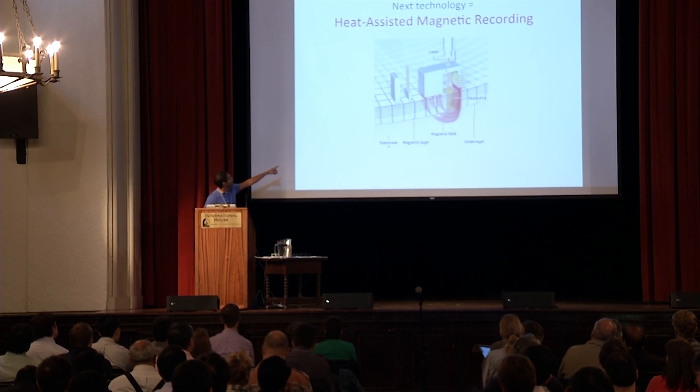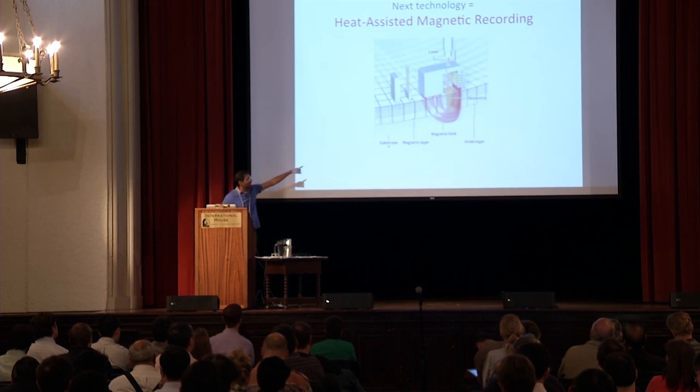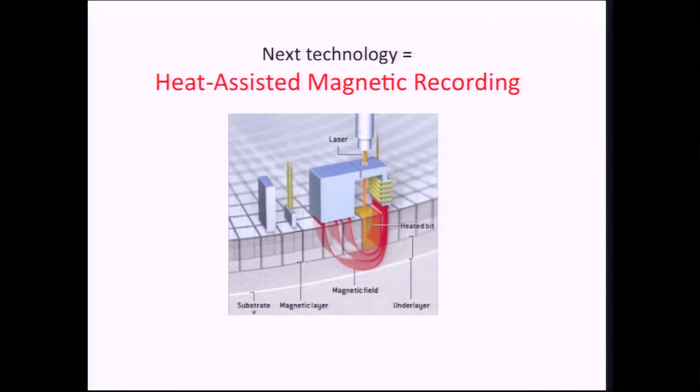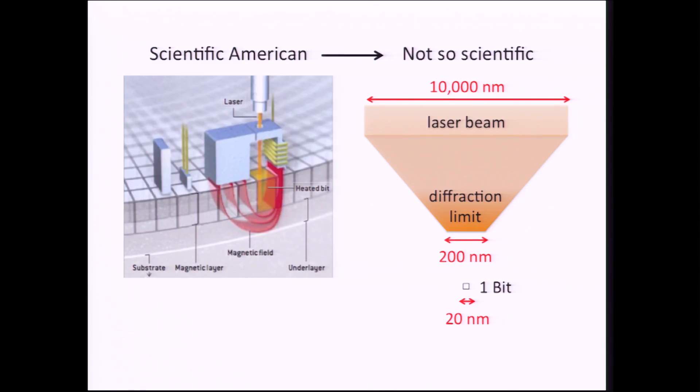This picture right here is from Scientific American, and it shows an electromagnet, a laser beam, and you can see the laser beam heating up like one little box, which is supposed to be one bit. Unfortunately, Scientific American wasn't so scientific when they made this. So the laser beam that's shown at the top is about 10,000 nanometers wide. The best thing you can do focusing light with lenses is the diffraction limit. That's a physical limit. So for our wavelengths of light that we're using, that's about 200 nanometers, whereas in a state-of-the-art hard drive, a bit is approximately 20 by 20 nanometers. It's way smaller than you can ever focus light with any conventional optics.